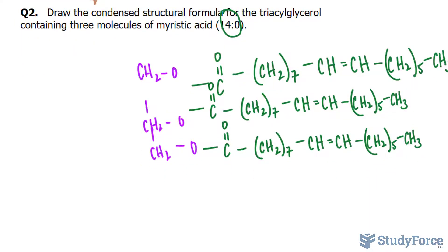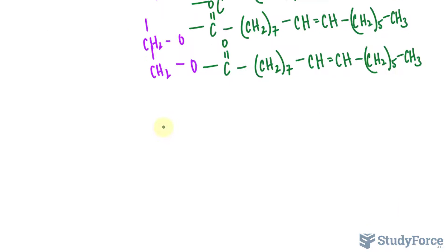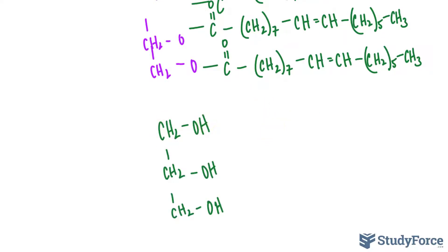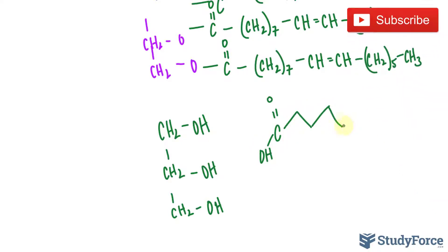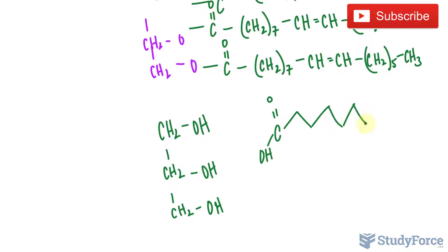Let's redo what we did in the previous question — that's the glycerol part of the molecule. In myristic acid, the line angle structural formula looks like this, where we have carbon double bonded to oxygen, single bonded to OH, and then counting the carbons: one, two, three, four, five, six, seven, eight, nine, ten, eleven.